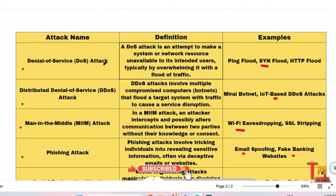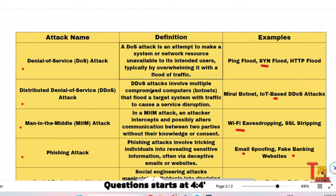The first attack is Denial of Service, or DOS attack. A DOS attack is an attempt to make a system or network resource unavailable to its intended users, typically by overwhelming it with a flood of traffic. The key example is SYN flood. Distributed Denial of Service, or DDoS attack, involves multiple compromised computers that flood a target system with traffic to cause a service disruption. An example is an IoT-based DDoS attack.